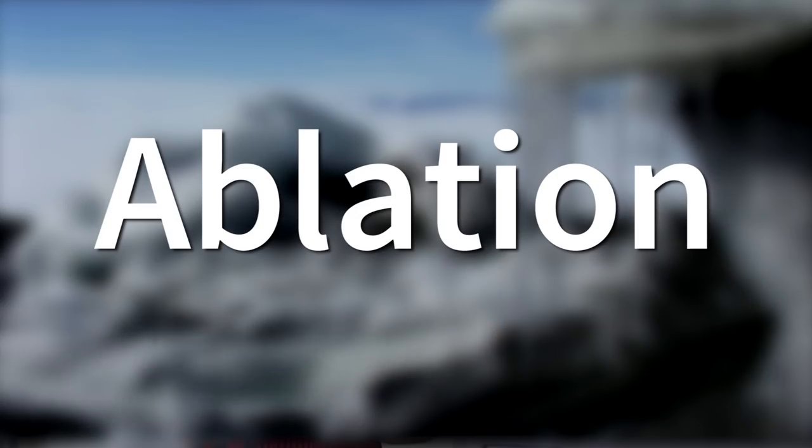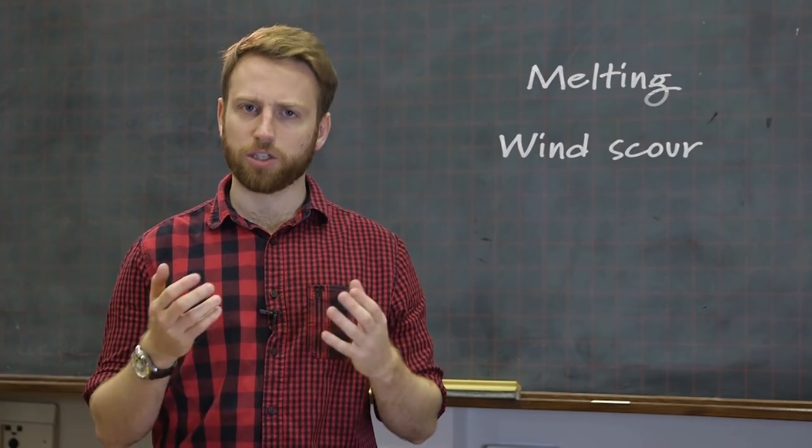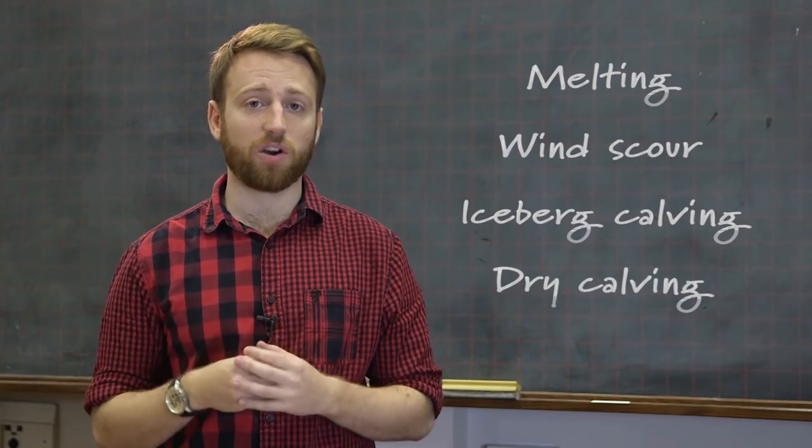And now we need to remove glacier mass from the system. This is done via ablation. Ablation is quite simply the removal of ice from the system, and this can be done through a variety of means. The main one of these is just pure melt, but you can also have wind scour, iceberg carving into water, or dry carving, which is simply the avalanche of ice off the front of a glacier. Melt rates can be calculated if the energy flux from all sources is known. This relates back to what we were talking about earlier with Simon. This is usually expressed in terms of surface lowering.